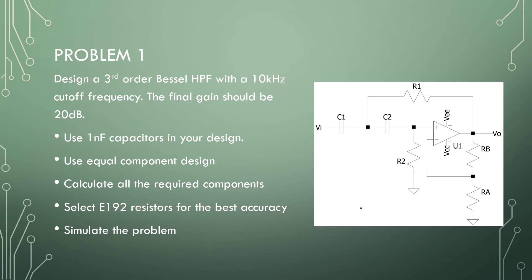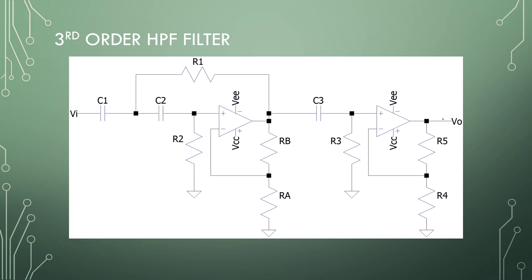The first design problem is to design a third order Bessel high pass filter with a 10 kHz cutoff frequency and a final gain of 10 dB. We must use 1 nF capacitors in the design with equal components, calculate all required component values selecting E192 resistor values, and then simulate the result. Third order means one KRC section and one first order section, with gain correction.